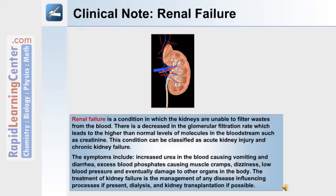The symptoms include an increase in the urea concentration in the blood, which leads to vomiting and diarrhea, excess blood phosphates which causes muscle cramps, dizziness, low blood pressure, and eventually damage to the other organs in the body. The treatment of kidney failure is the management of any disease influencing processes if present, dialysis, and kidney transplantation if possible.